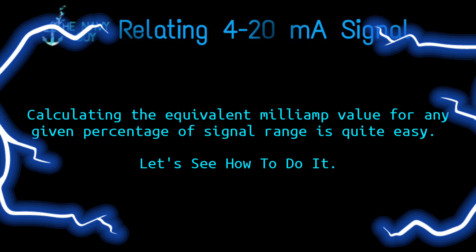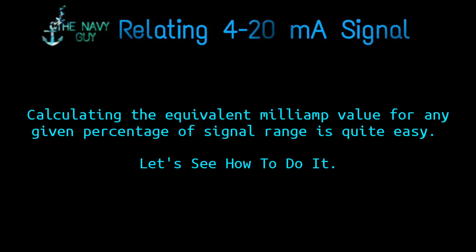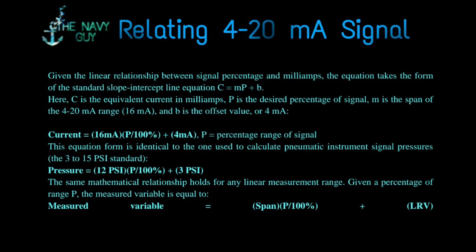Calculating the equivalent milliamp value for any given percentage of signal range is straightforward. Given the linear relationship between signal percentage and milliamps, the equation takes the form of the slope-intercept line equation: C = m × p + b, where C is the equivalent current in milliamps, p is the desired percentage of signal, m is the span of the 4 to 20 mA range (16 mA), and b is the offset value of 4 mA. Therefore: Current = (16 mA × p / 100%) + 4 mA. This form is identical to the pneumatic equivalent: Pressure = (12 psi × p / 100%) + 3 psi.